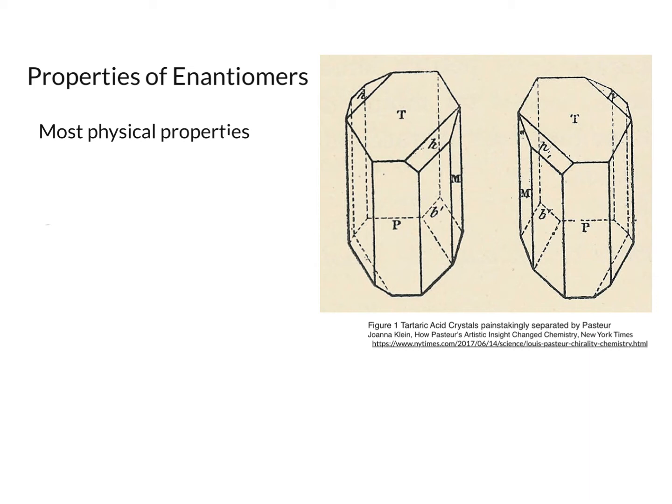So what he did was he separated the crystals that were the different mirror images, so the left from the right. He took tweezers and basically separated them. It probably took a very long time. And then he decided he would get all those crystals separated and measure their properties. So he went through physical properties that you normally would measure, like melting point, density, things like that. And he found they were all the same. So that was not very exciting. So as we see, enantiomers, most of their physical properties are going to be the same. So that's normal.